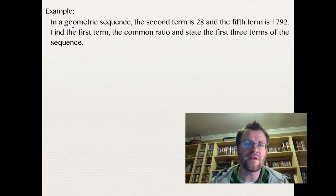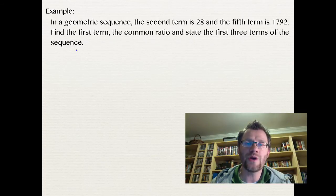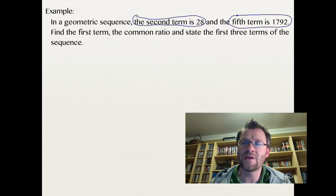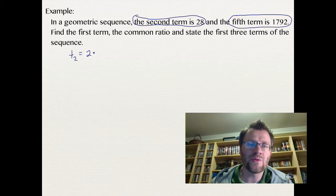Here's another example. It says, in a geometric sequence, the second term is 28, and the fifth term is 1792. Find the first term, the common ratio, and state the first three terms of the sequence. So we've done questions like this before. We need to make two equations because we have two sets of information. We know that the second term is 28, so we can make one equation with that information, and that the fifth term is 1792. We can make another equation with that information.